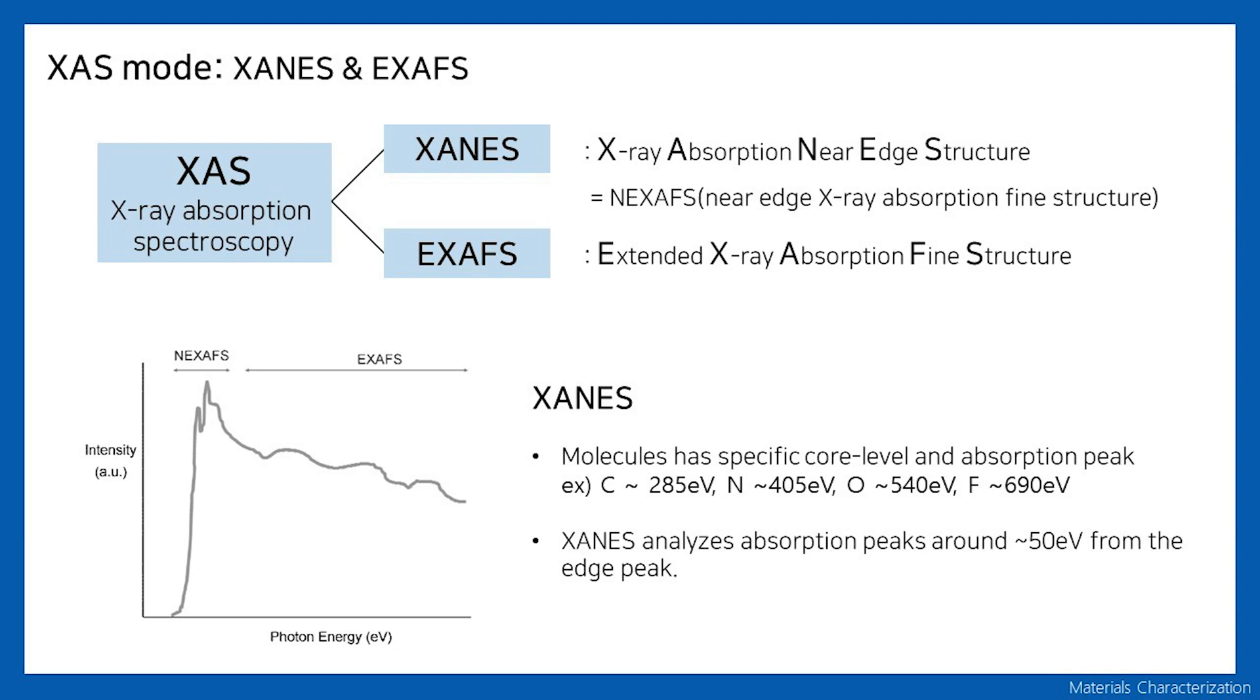X-ray absorption can be divided into two modes depending on the wavelength. One is XANES and the other is EXAFS. XANES is X-ray Absorption Near-Edge Structure and is the same as NEXAFS. EXAFS is Extended X-ray Absorption Fine Structure. EXAFS is mainly used to analyze distance between atoms, and we will focus on XANES analysis.